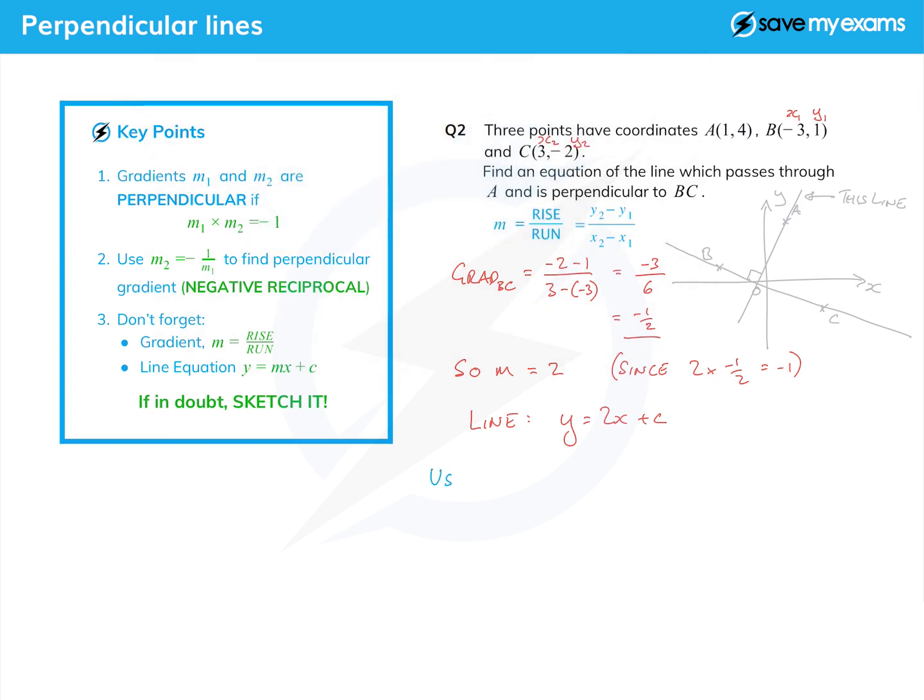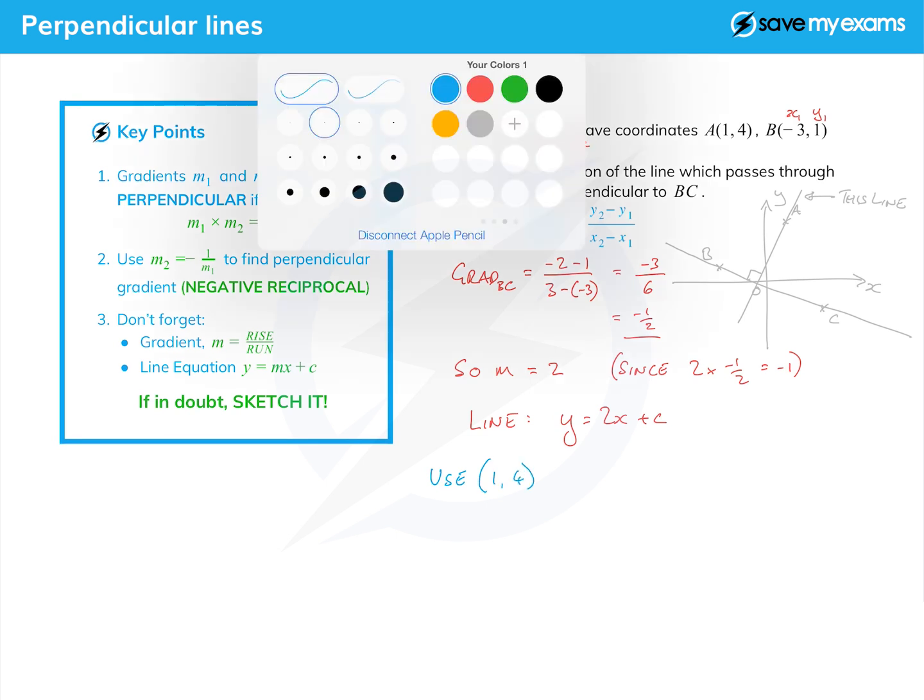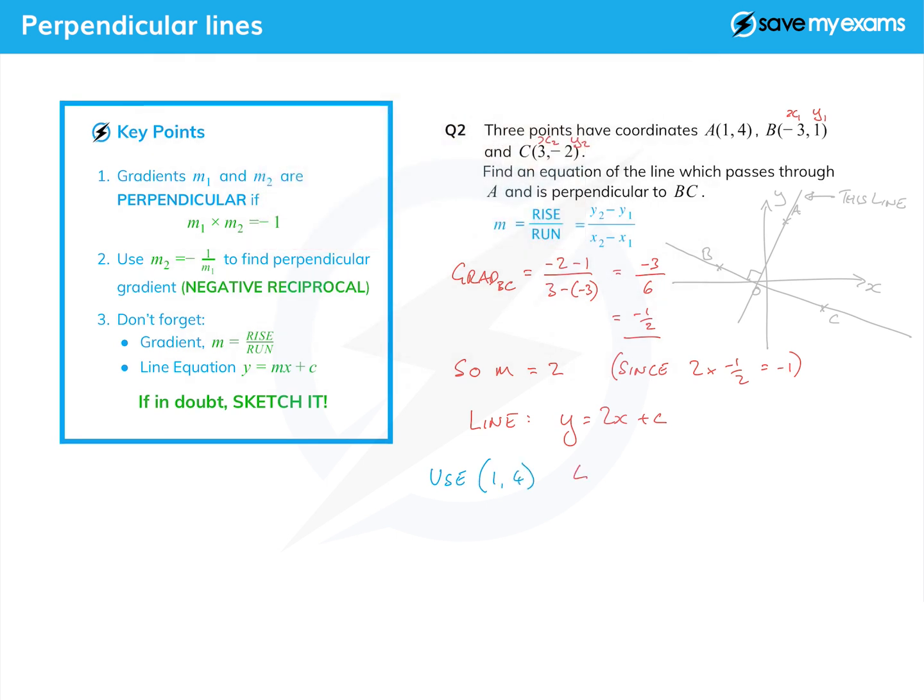As we did before we're going to use the point on the line which is (1, 4). That gives me 4 because that's the y value equals 2 times 1 because that's the x value plus c. Then I'm going to subtract the 2 times 1 which is just 2 from both sides.